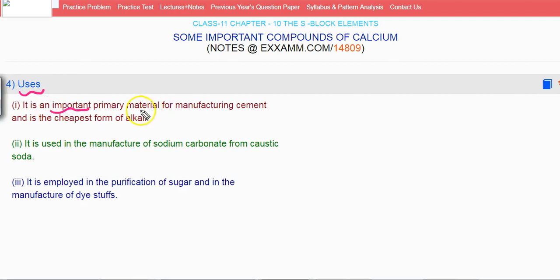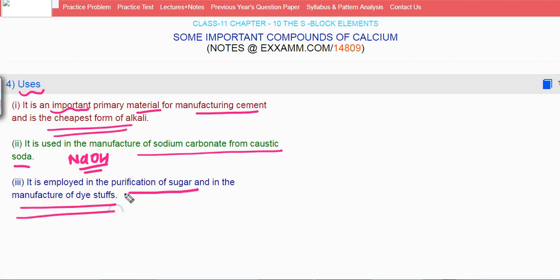It is an important primary material for manufacturing cement and is the cheapest form of alkali. It is also used for manufacturing sodium carbonate from caustic soda, and for purification of sugar and manufacturing of dye stuffs.